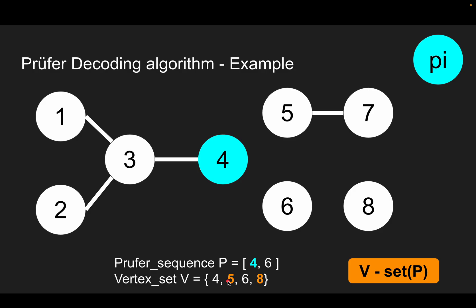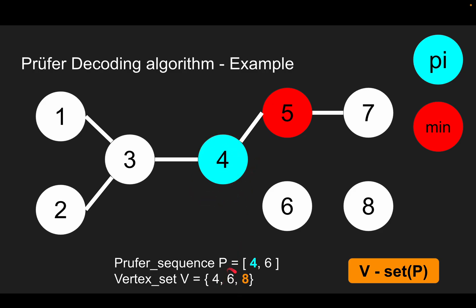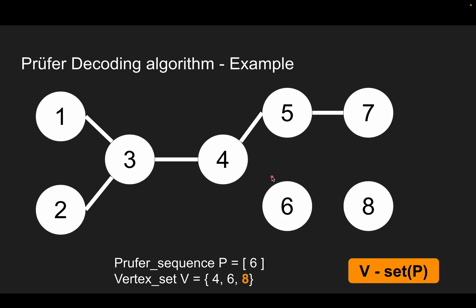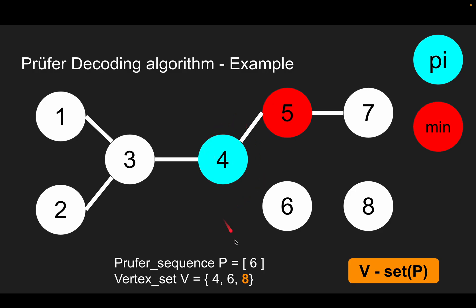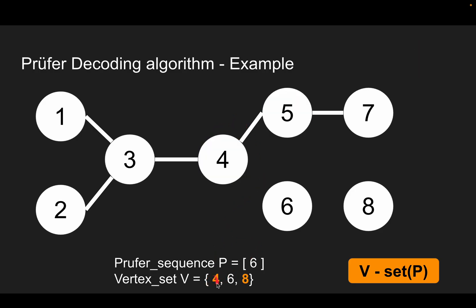Next iteration, pi is 4. The smallest one in the yellow set is 5. We connect the smallest one with pi. We remove the smallest one from V and remove pi from P. After removing pi, since 4 no longer exists in P, we add 4 as a member of the yellow set.